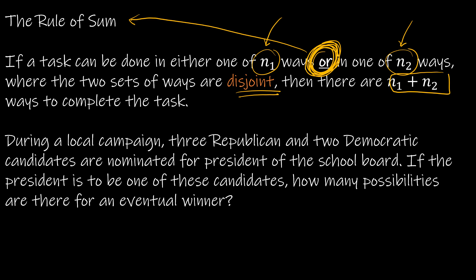You use the rule of sum when you have just one event that's occurring. So one event, but multiple ways it can happen. So for instance, during a local campaign, we have three Republican and two Democratic candidates that are nominated for president of the local school board. If the president is to be one of these candidates, how many possibilities are there? Well, if there are three Republican and two Democrat, and we know a person can't be both Republican and Democrat, all I have to do is take three plus two to get five. So there are five ways that that could happen. Five different possible presidents of the school board.